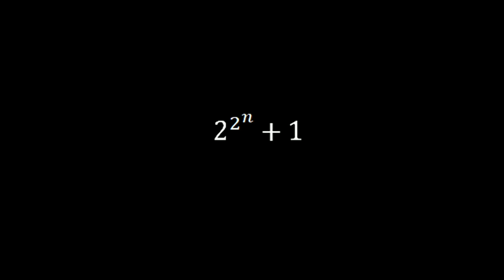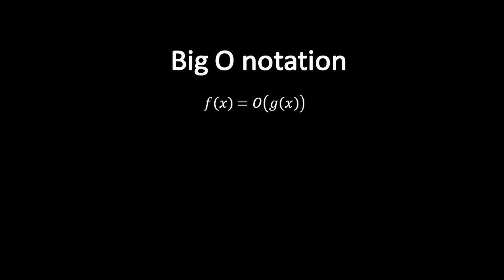Now before moving on, let's have a rough idea about the big O notation. We say f of x equals O of g of x if the absolute value of f of x is less than or equal to a constant times the absolute value of g of x.